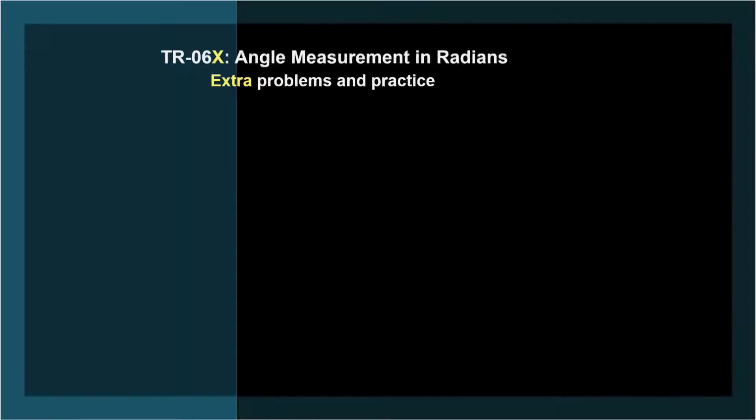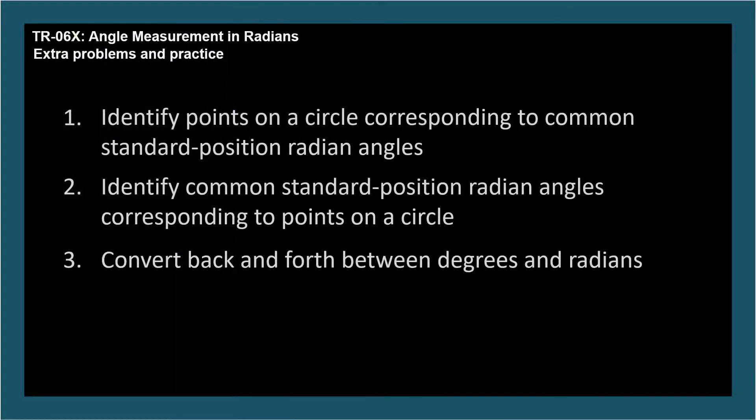The learning objectives for TR-06 are identify points on a circle corresponding to standard position angles expressed in radians, identify common standard position angles in radians corresponding to points on a circle, and convert back and forth between degrees and radians.